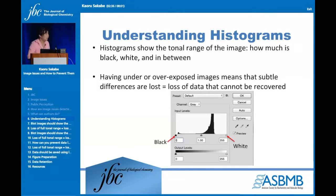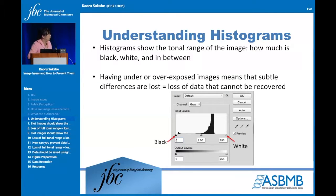The first thing I want to talk about is histograms. If you're a photographer like Fred, you're probably used to seeing these in Photoshop or Lightroom. Basically, it shows the tonal range of the image — how much is completely black and how much is completely white, and all the gray values in between. This is what an unmanipulated Western blot histogram would look like — none of these pixels are completely black, and none are completely white. When you have an underexposed image, the histogram shifts toward the black edge; overexposed shifts it to the white. Shifting in either direction causes you to lose subtle differences in your Western blot images.